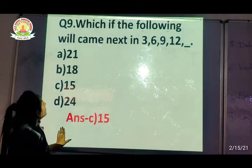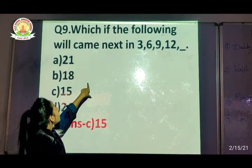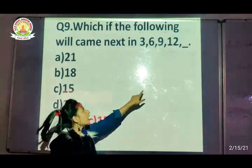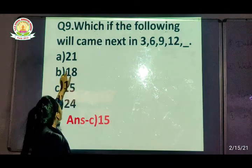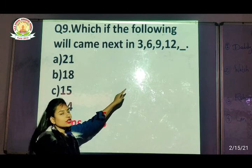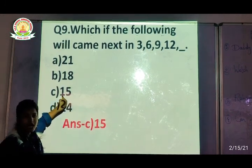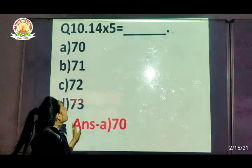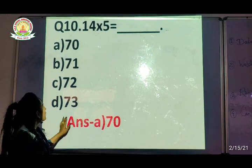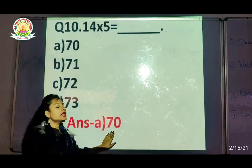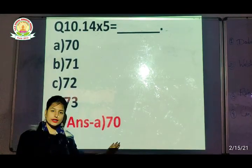Now the other question is: which of the following will come next in 3, 6, 9, 12? This is a factor of 3. Option is 20. If we have a table, the other option will be 15. The table values are 45, 70, 72, 73. If we want to check, here we can see the table. Thank you!